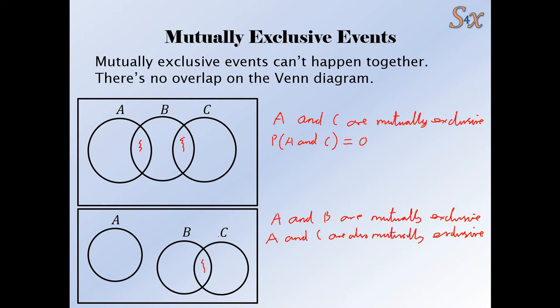Hopefully you can read my terrible handwriting there. So B and C aren't mutually exclusive. There's an overlap between them. But A and B and A and C are.